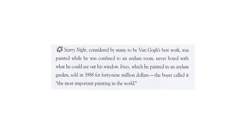Starry Night, considered by many to be van Gogh's best work, was painted while he was confined to an asylum room — never bored with what he could see out his window. His Irises, which he painted in an asylum garden, sold in 1988 for $49 million. The buyer called it the most important painting in the world. He couldn't even get one dollar for his work during his lifetime, and years later it sold for $49 million.